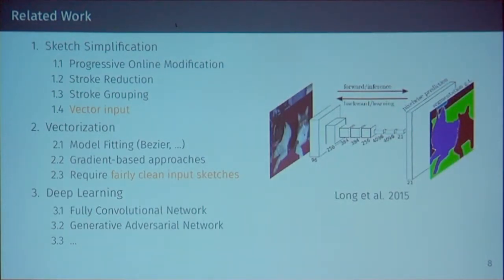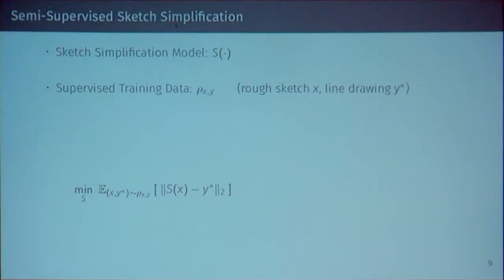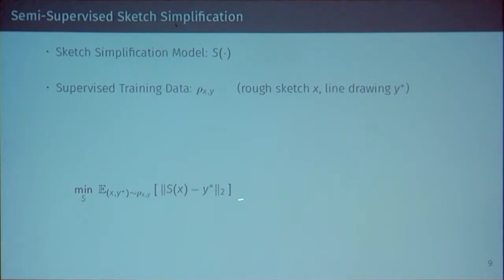We are using a deep learning based approach using fully convolutional networks. I'll also talk about a different use of generative adversarial networks — mainly using the adversarial loss as a sort of proxy for structural loss. The basic setup is a sketch simplification model parameterized by a deep neural network, trained on supervised data consisting of rough sketches and corresponding line drawings. The fairly simple approach is to optimize the expectation of the L2 norm of the output minus the ground truth — basically optimizing MSE in a supervised manner.